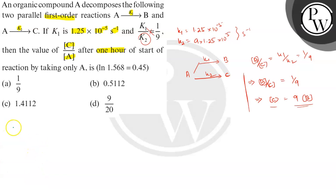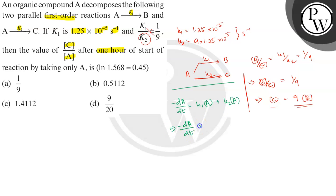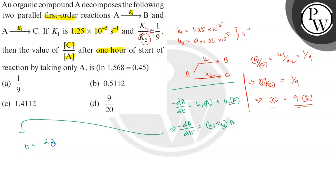Since both are first-order reactions, we write a common expression for the decomposition of A: −da/dt = k1·a + k2·a = (k1 + k2)·a. This gives the integrated first-order equation: t = (1/(k1+k2)) × ln(a0/at).